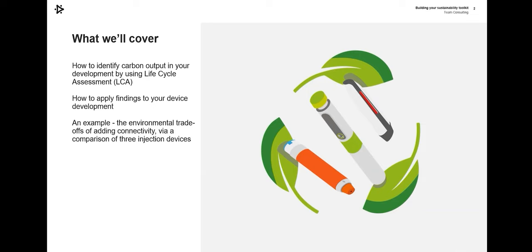Over the next 20 minutes we'll cover how to identify the carbon output in your products by using Lifecycle Assessment or LCA, then how to apply those findings to your device development throughout the development process from concept all the way through to productionisation. We'll also look at an example of some of the complex trade-offs you have to consider looking at adding functionality — in this case connectivity — and the comparison of three different injection devices and the impact that each of those have.